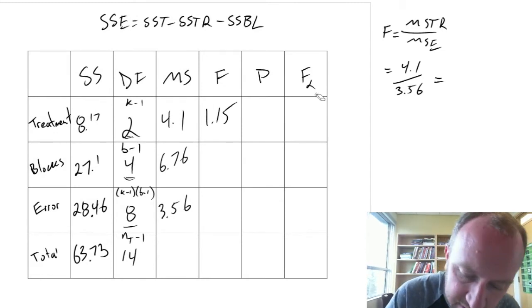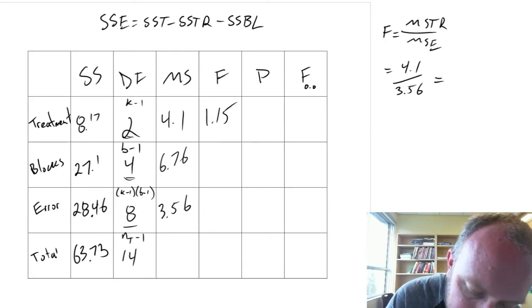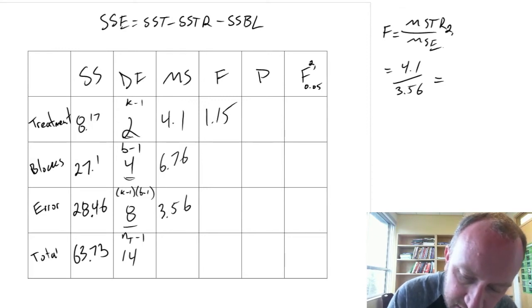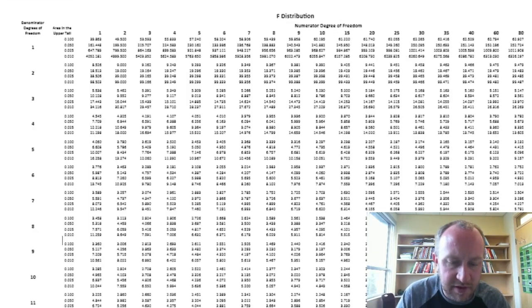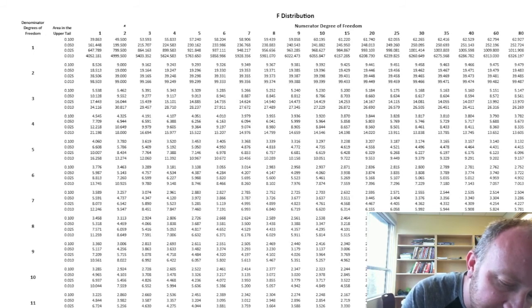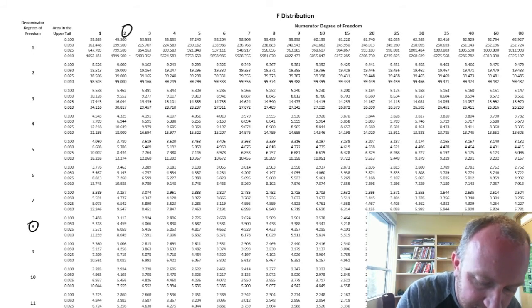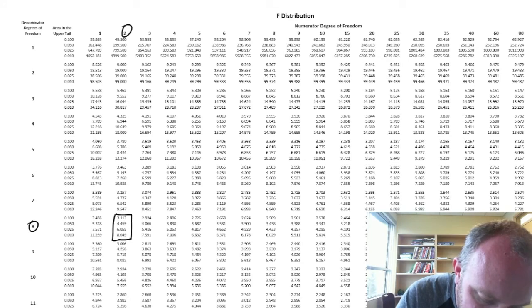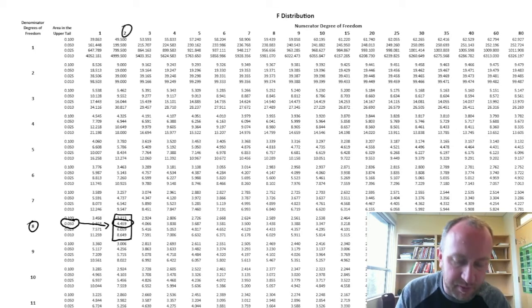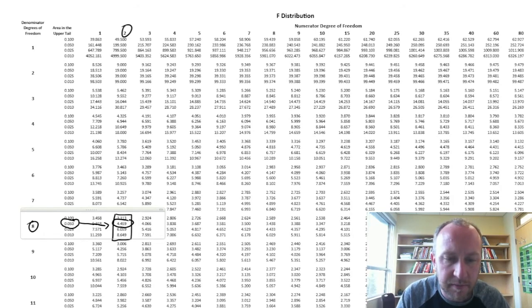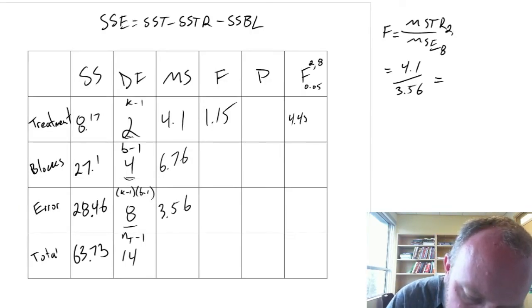Let's do critical value. So this alpha is 0.05. We have 2 degrees of freedom. MSTR was 2. And MSE was 8. So 2 and 8 degrees of freedom. F-distribution. 2 degrees of freedom there. 8 degrees of freedom there. So we're coming down to this block of numbers. Alpha is 0.05. So coming back across. That gives us a critical value of 4.459. 4.459.